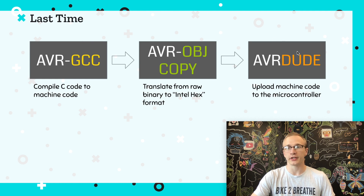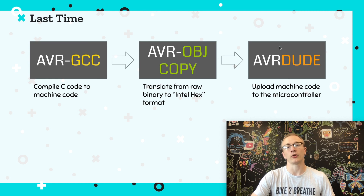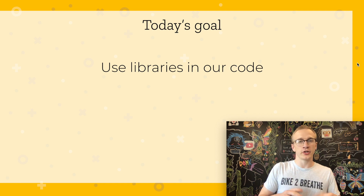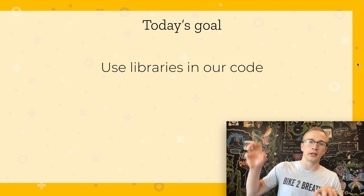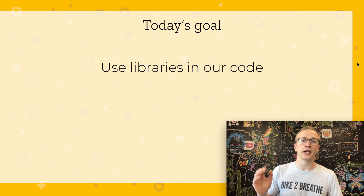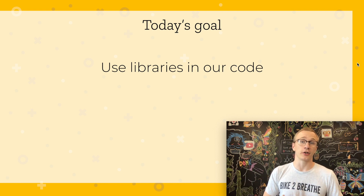The goal is to get it to AVRDUDE, which pushes it onto our microcontroller. We have AVR object copy in between to convert from the raw binary into the Intel hex format that AVRDUDE can handle. We now know how to compile code that we wrote, but the question is how do we bring in code that other people have written into our project? Our goal for today is to use external libraries and incorporate them into our code.